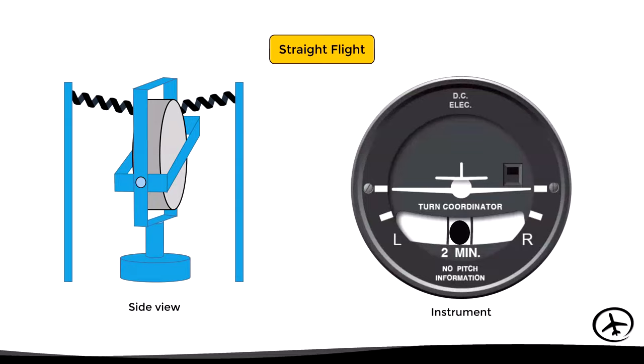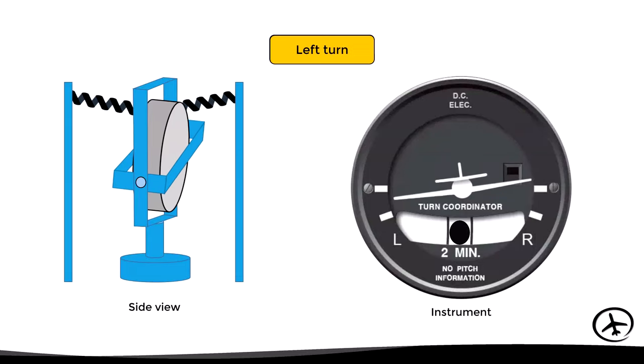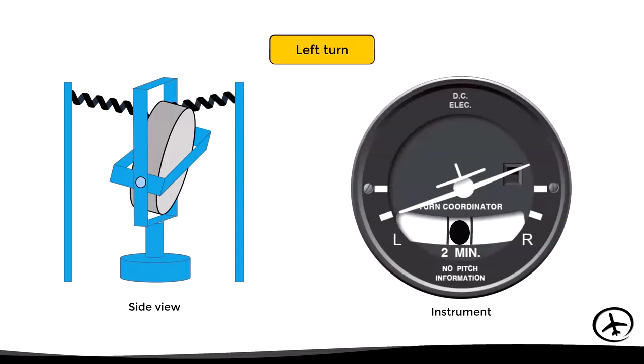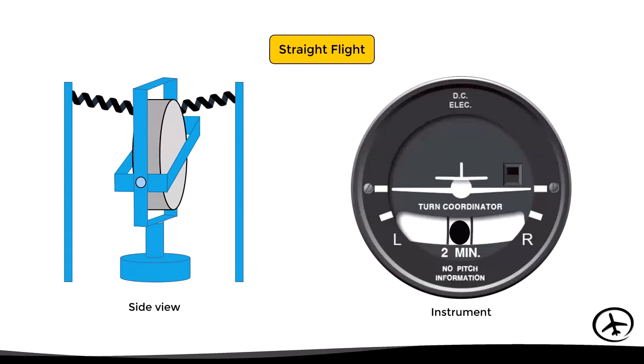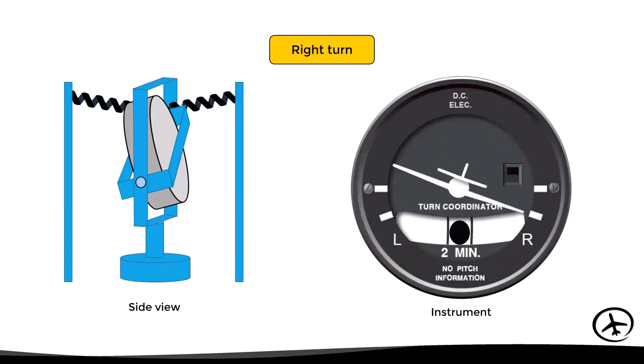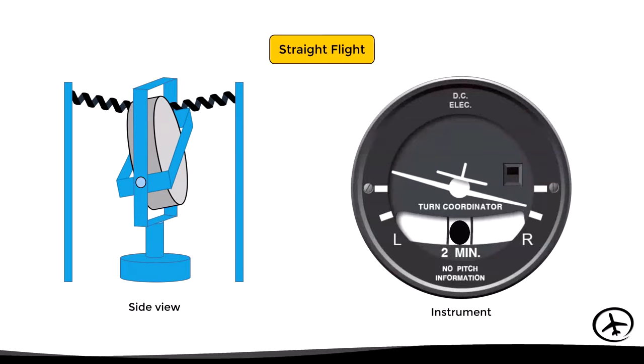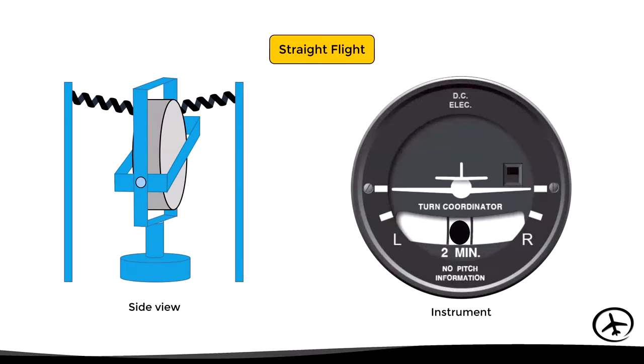Here are examples of the turn coordinator's internal operation: when flying straight, the gyro remains in the neutral position and the miniature aircraft wings are leveled. If the aircraft starts turning to the left, the precession caused by the heading change and banking motion causes the gyro to tilt, moving the miniature aircraft to indicate a left turn. When the aircraft stops turning, precession stops and the springs return the gyro to neutral. The same happens in reverse for a right turn.